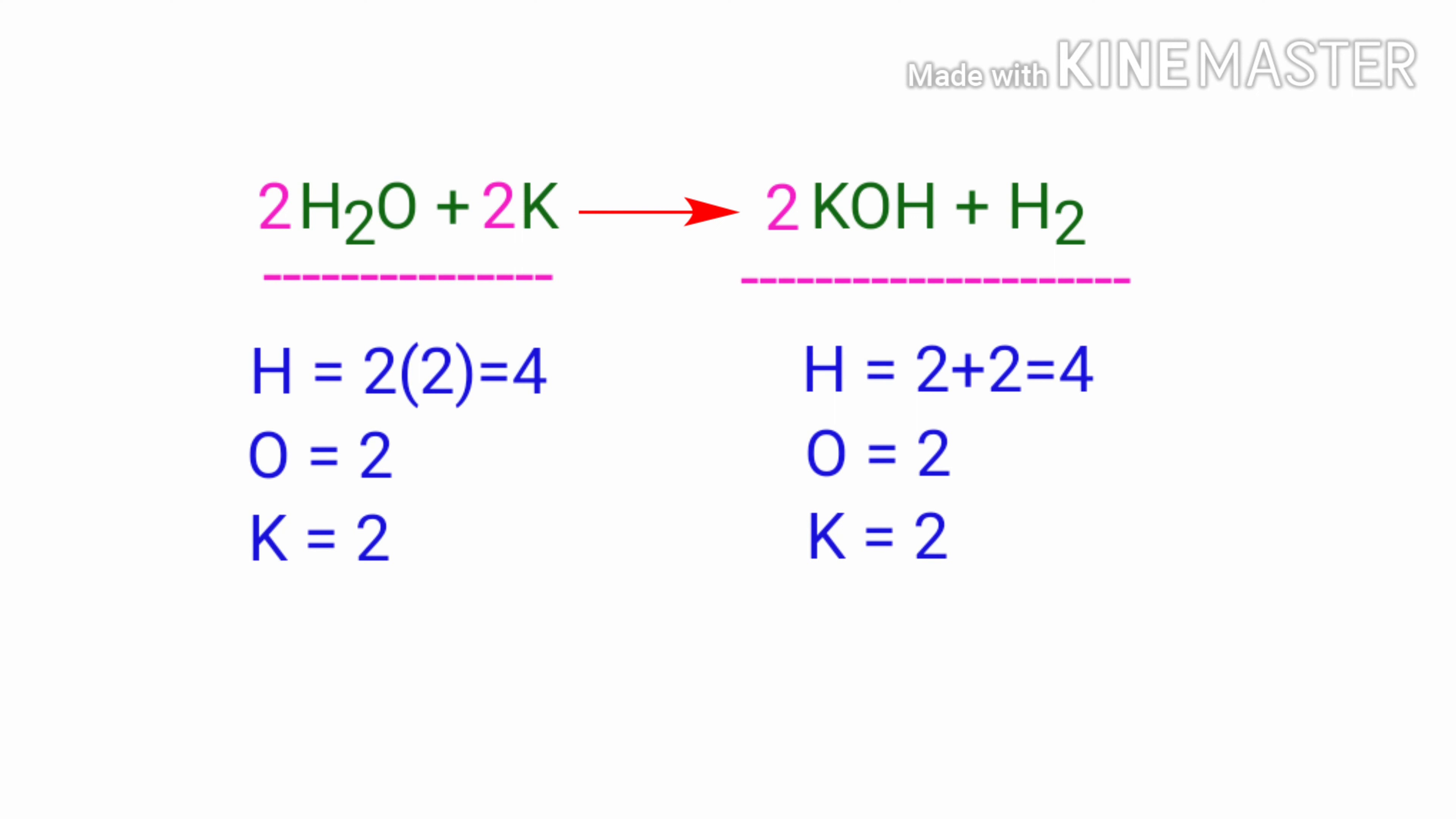The equation is now balanced. There are 4 hydrogen atoms, 2 oxygen atoms and 2 potassium atoms on both sides.